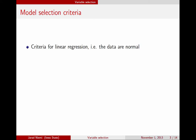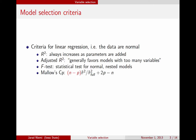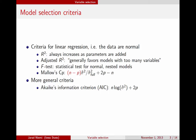There are a number of different ways that you can decide which model to select. In linear regression, where we've assumed the data are normal, one criterion you might consider is R-squared. The problem is that R-squared always increases as the number of parameters increases. Adjusted R-squared was proposed, but it generally favors models with too many variables. We've also talked about the general F-test, which works well for nested models, but when considering all possible subsets, you won't always have nested models. There's also Mallow's CP, particular to normal data, which is related to the more general Akaike Information Criterion, or AIC.